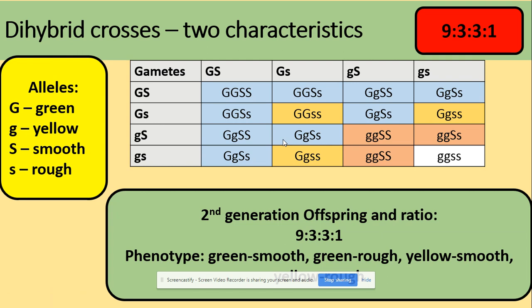Three of them are green and rough — those individuals have got at least one dominant allele for colour green and two lowercase S's. We've also got three of the yellow and smooth — for those we need two lowercase G's and at least one uppercase S. And we've got one yellow and rough, which is two lowercase G's and two lowercase S's.